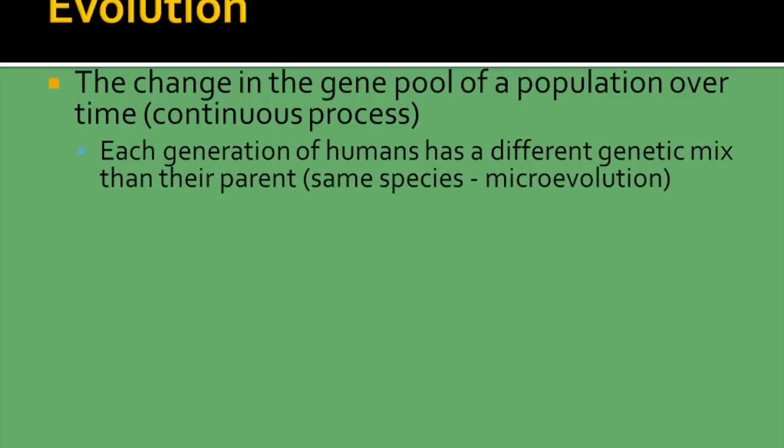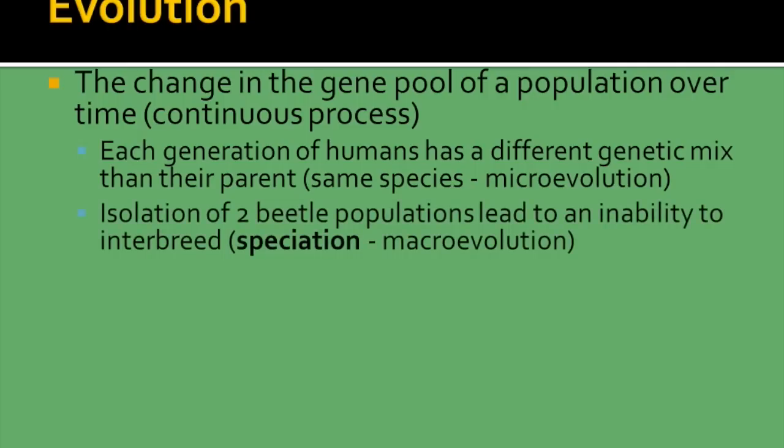Each generation of humans has a different genetic mix than their parents — we're talking about the same species, about microevolution, changes that occur within the human race over time. We can also talk about macroevolution, which we get due to speciation. One way we get speciation is with the isolation of things such as two beetle populations, leading to the inability to interbreed with one another and thus a whole new species.